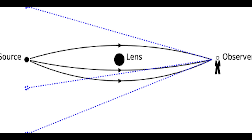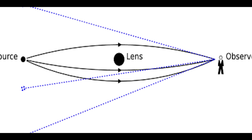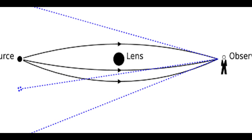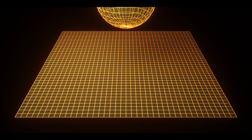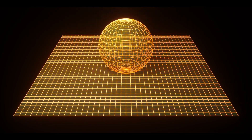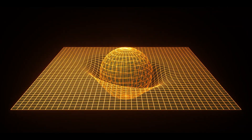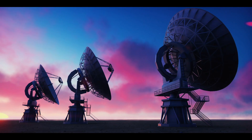Gravitational microlensing is the most reliable method for detecting rogue planets. A planet's gravitational pull can cause distortions in space as a result of this method. Astronomers search vast areas of space for gravitational microlensing in order to find rogue planets. Currently, this is the only method used to detect rogue planets.